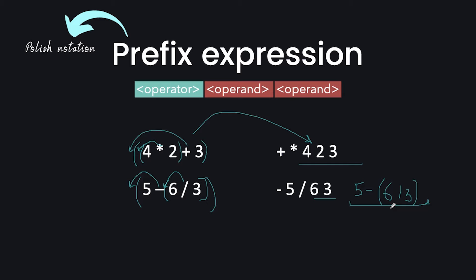So the computer does not need to know precedence itself. We know precedence. According to precedence, we create a prefix expression, and then we give the computer the prefix expression to evaluate. Looking at another example with three operands — I see a multiplication operator working on two operands: 4 and 2. This gives us the correct evaluation of the original expression.